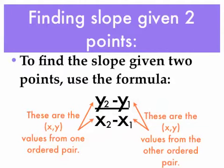Remember, we've talked about slope as rise over run, and also as the change in y over the change in x. So y's are going to go on top and x's are going to go on the bottom to keep slope as rise over run. Remember, y tells you how to move up and down in the coordinate plane and x tells you how to move left and right.